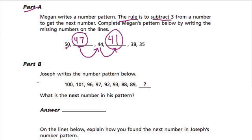In part B, we're told that Joseph writes the number pattern below, and we want to know what is the next number in his pattern. Let's take a look. We start with 100, and then we add 1 to get 101. And then we subtract 5 to get 96. You can do the math there to check it. Add 1 get 101, take 5 away and get 96.